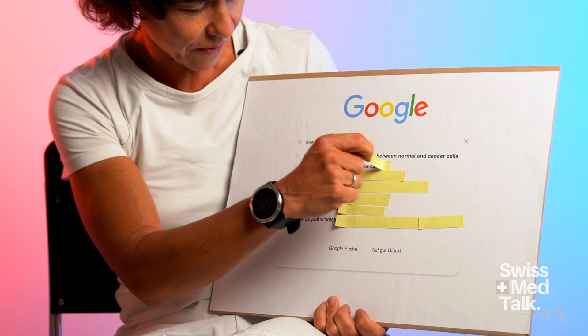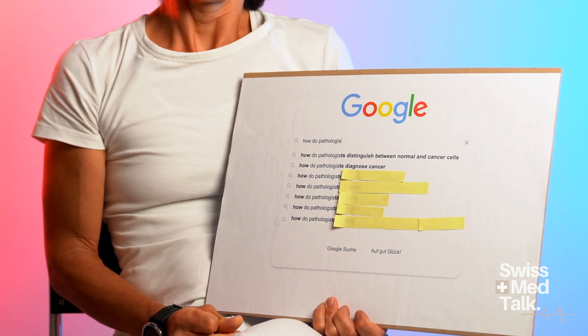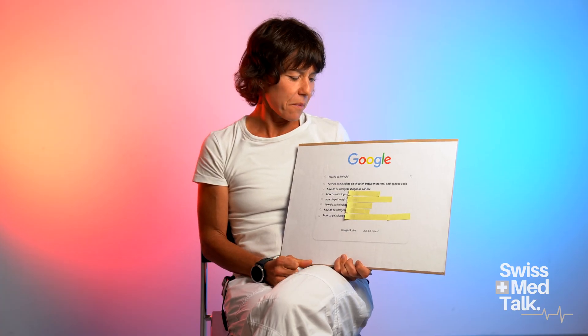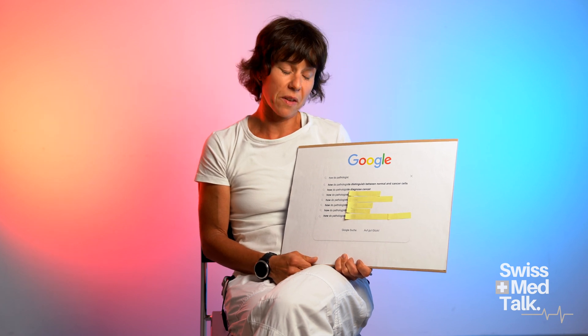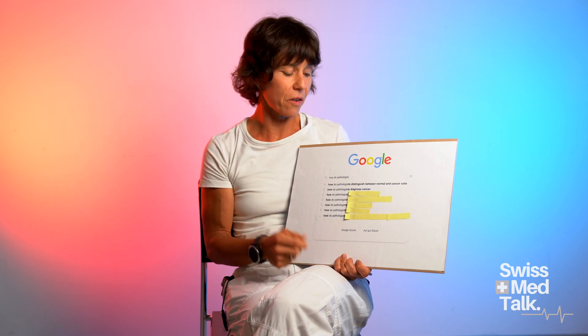Next question: how do pathologists diagnose cancer? Well, we start with a microscope. We still have microscopes. We can do some digital pathology if we scan the slides, but at the moment it's on a glass slide, tissue section, looking in the microscope. And we try to differentiate and see: is this something that we recognise as normal? If not, why not?